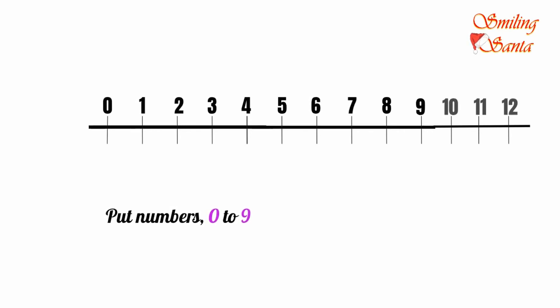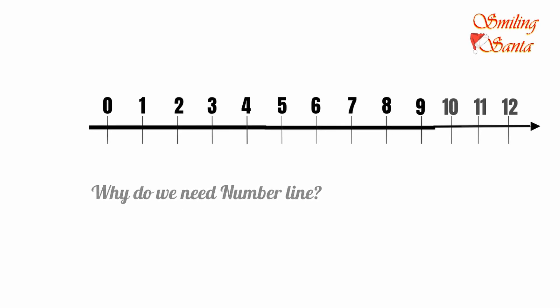On the right side, we will put an arrow. This indicates there are more numbers to come. And the line doesn't end here. We call this line as number line. You must be thinking, why do we need a number line? We have numbers. Then why number line?